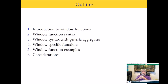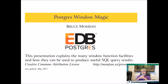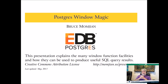Take a look at the URL — momjian.us. This presentation is available online, so if you want to download it now or look at it later, that URL at the bottom right is where you'll want to go. There are probably 25 to 30 presentations on my website, many of them with videos. This talk I only finished about a month or two ago.